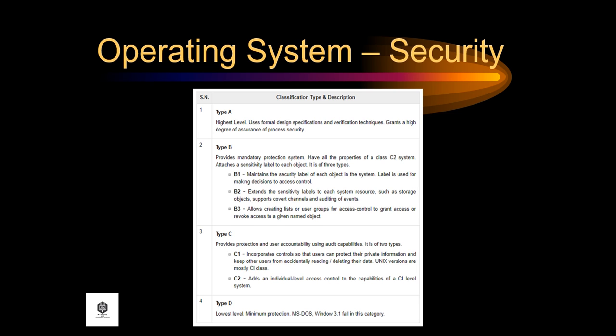Type B provides a mandatory protection system and has all the properties of a class C2 system. It attaches a sensitivity label to each object and is of three subtypes: B1, which maintains the security level of each object and uses labels for access control decisions; B2, which extends sensitivity labels to each system resource, supports covert channels, and auditing of events; and B3, which allows creating lists or user groups for access control to grant or revoke access to a given named object.